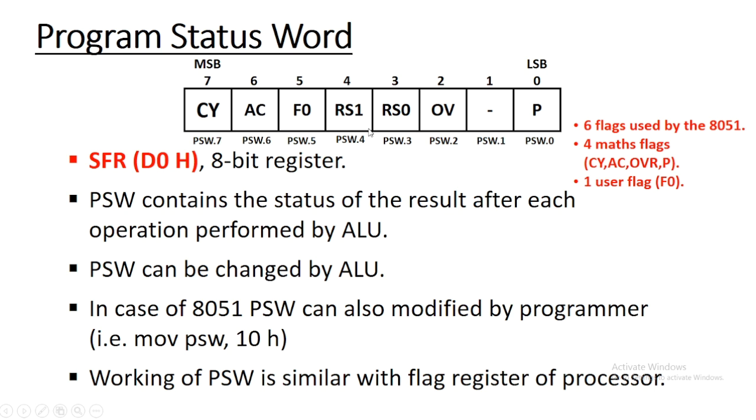Program status word is an 8-bit register, and in this 8-bit register, 7 bits are used. One bit is unused, which is reserved for future purpose.